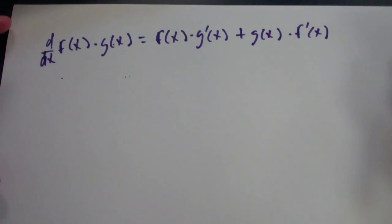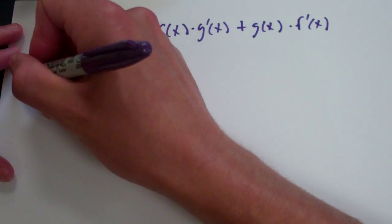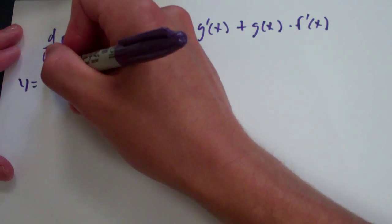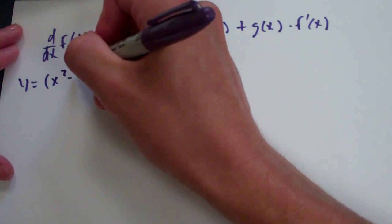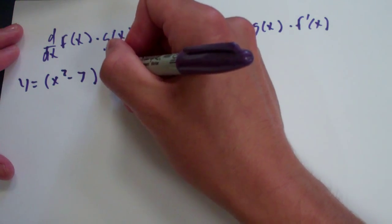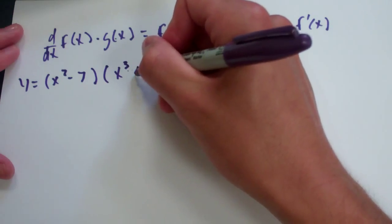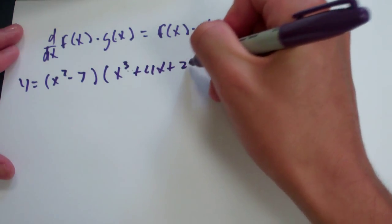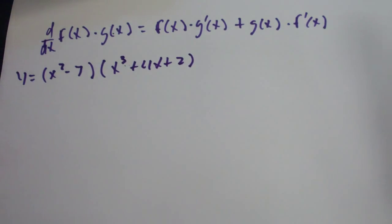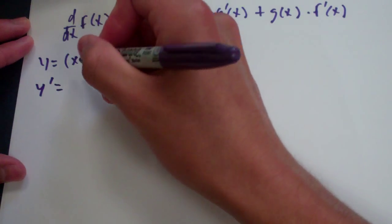So, let's see. Let's actually do one using this. Let's try this. Y is equal to x squared minus 7 times x cubed plus 4x plus 2. Okay, so what's the derivative of this? Okay, we have y prime is equal to, here's our first function. We're going to leave it like it is.